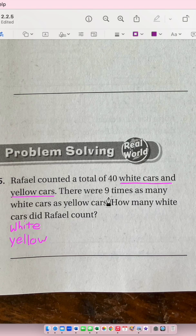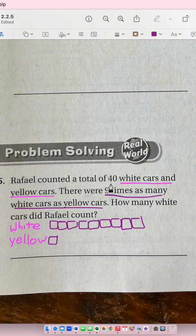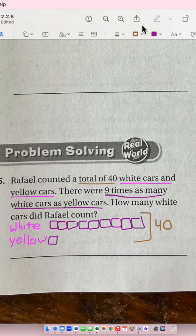There were nine times as many white cars as yellow cars. Draw nine white boxes and one yellow box. These add up to a total of 40. This whole thing is going to equal 40.